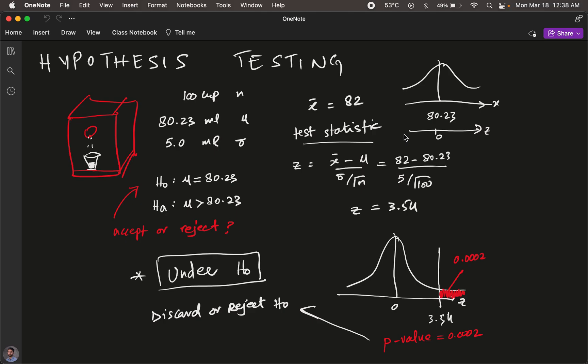Last time we had a coffee machine calibrated to dispense 80.23 milliliters of coffee per cup, and we wanted to test the hypothesis of whether it's dispensing more than the calibrated value. This was problematic because if it dispenses more, you're doling out free coffee to everybody.